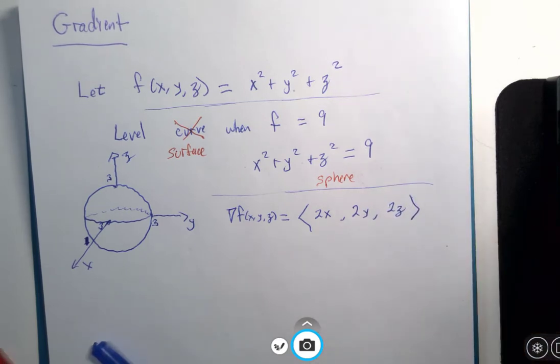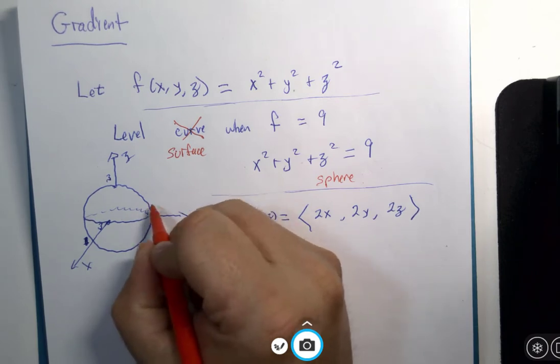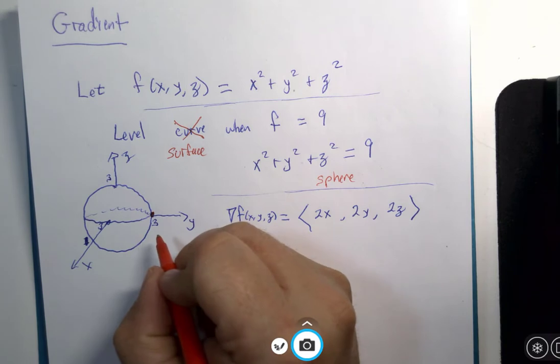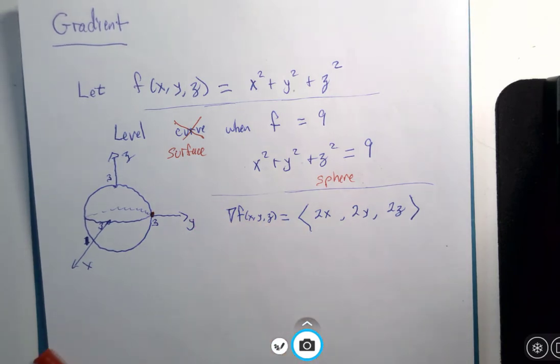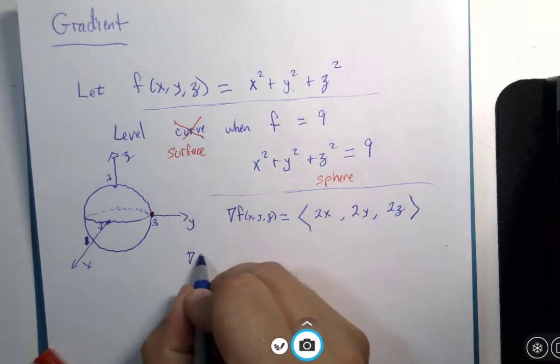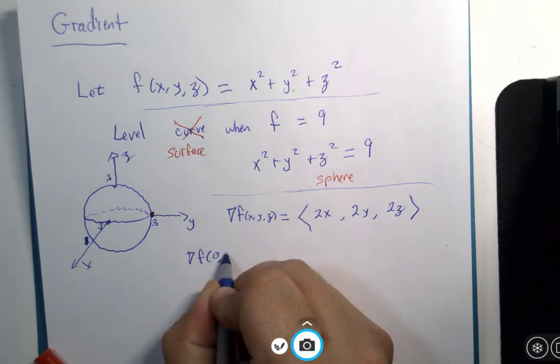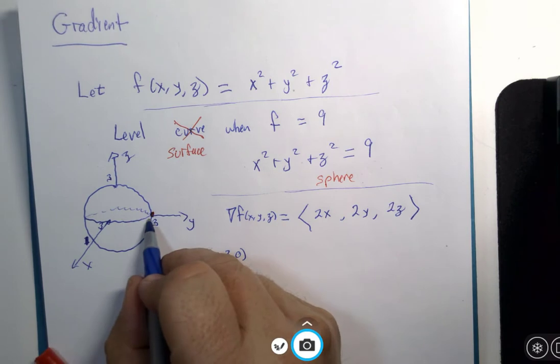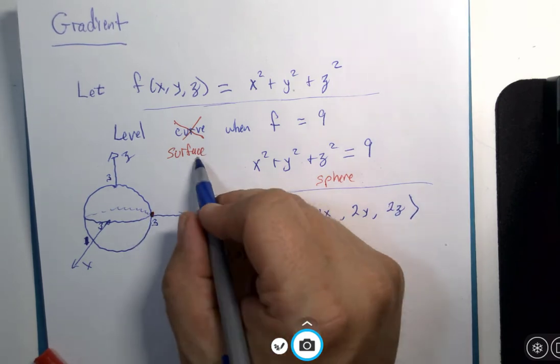And let me just show you, take it for a test drive. If we were looking for the normal vector here, the full coordinates of that point are 0, 3, 0. That's a point on the sphere, on the surface.